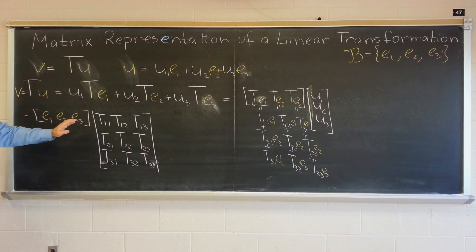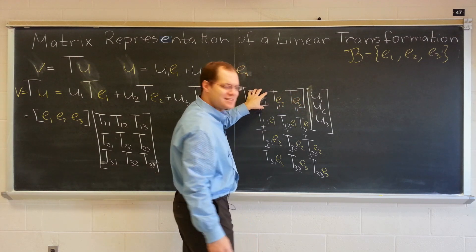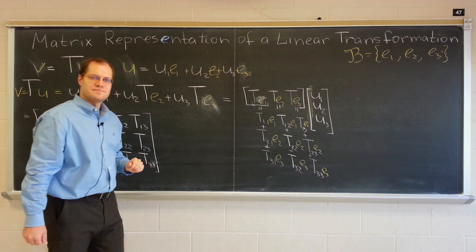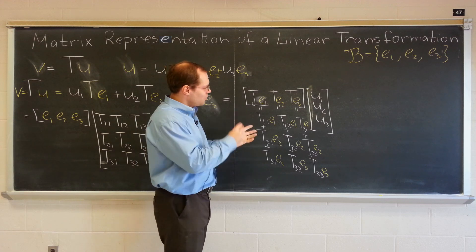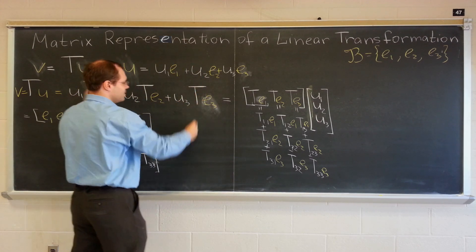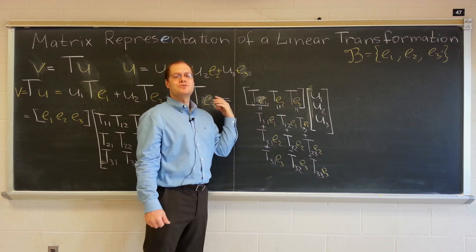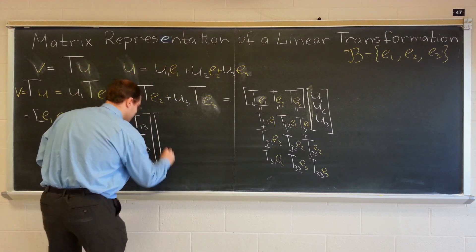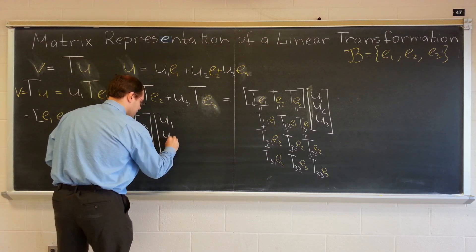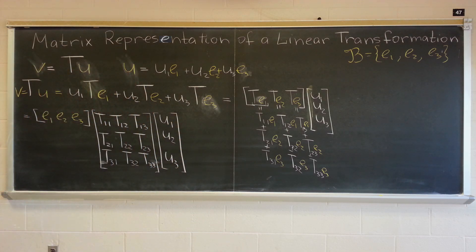So according to the matrix formalism, this matrix of vectors — I've stuck in vector entries, which is a nice way to use matrices to organize the calculation — multiplied by U1, U2, U3 on the right gives T(U). Don't forget that all of this equals V.